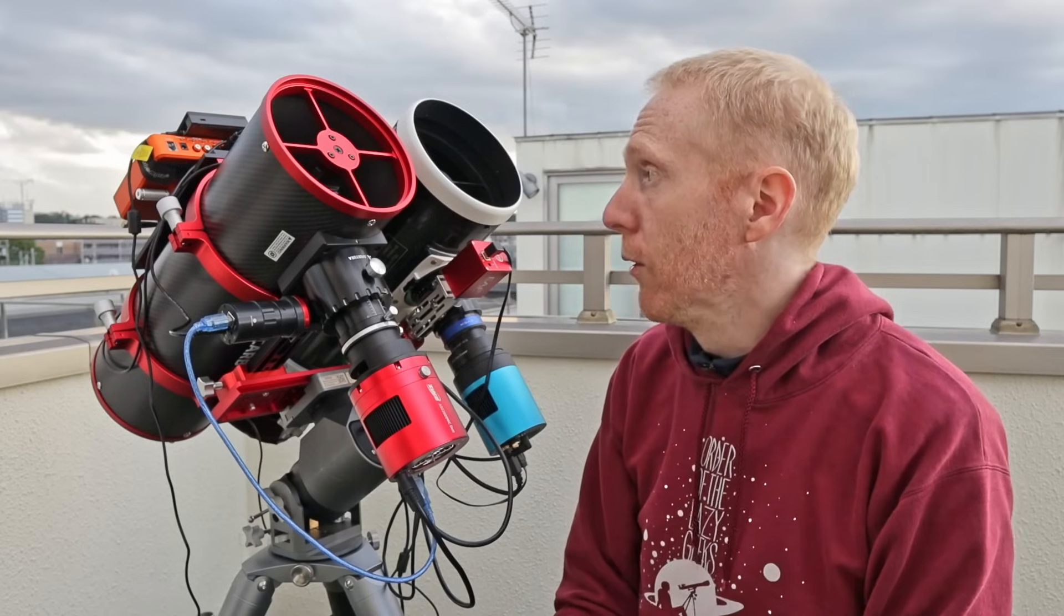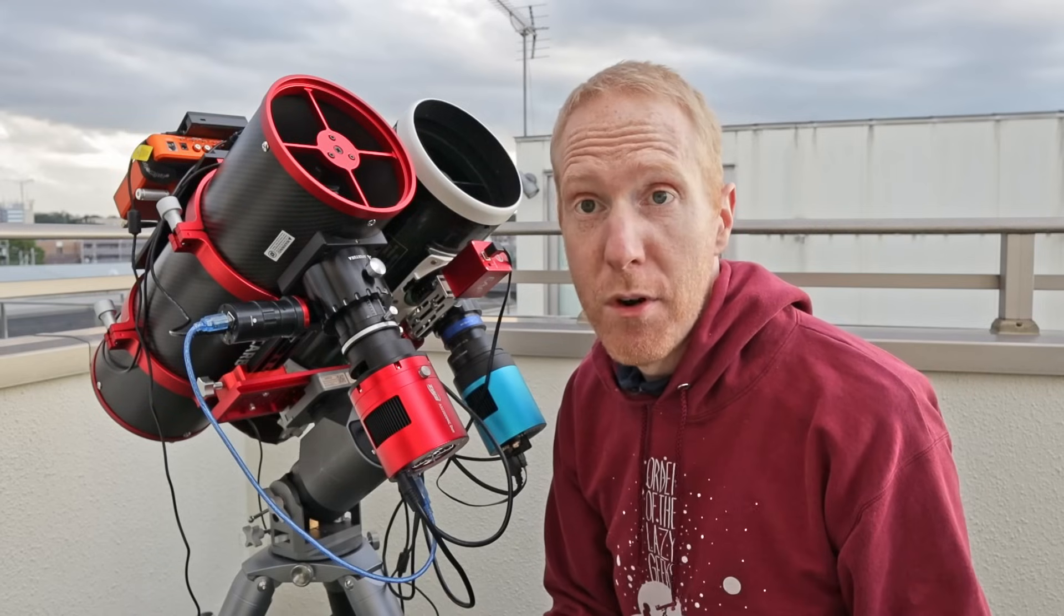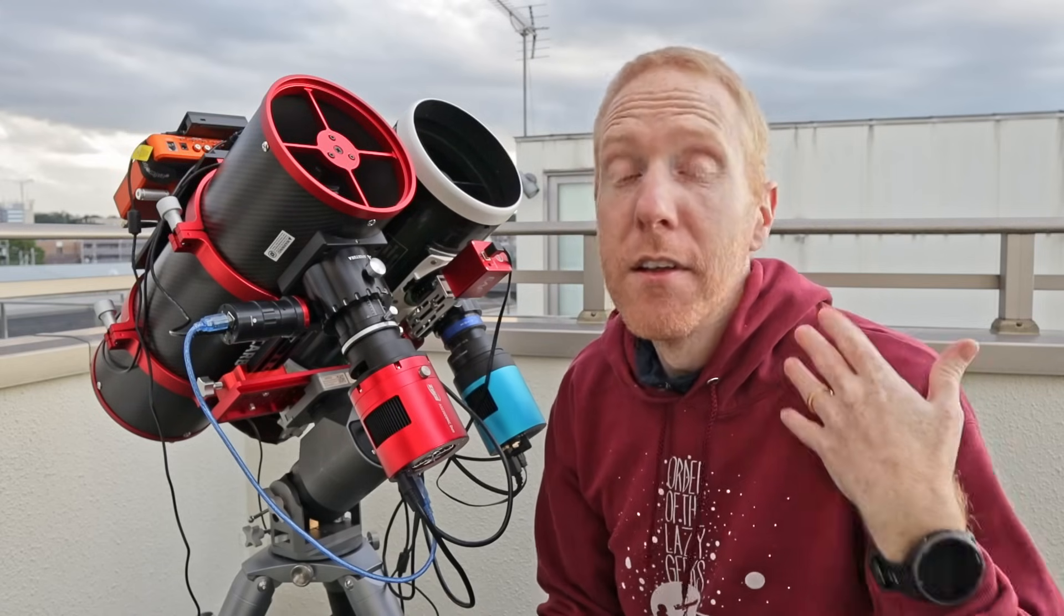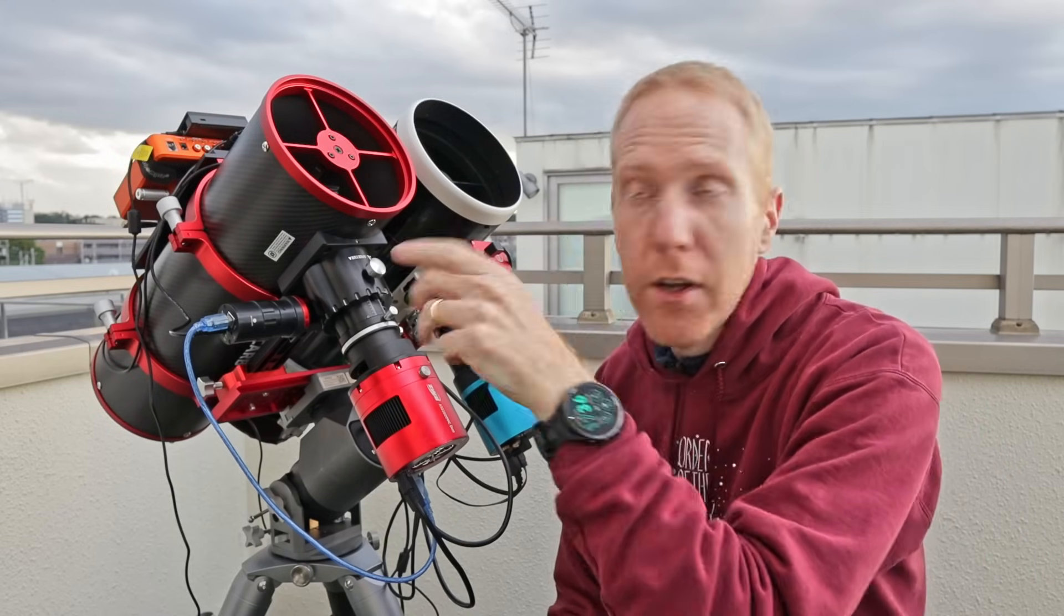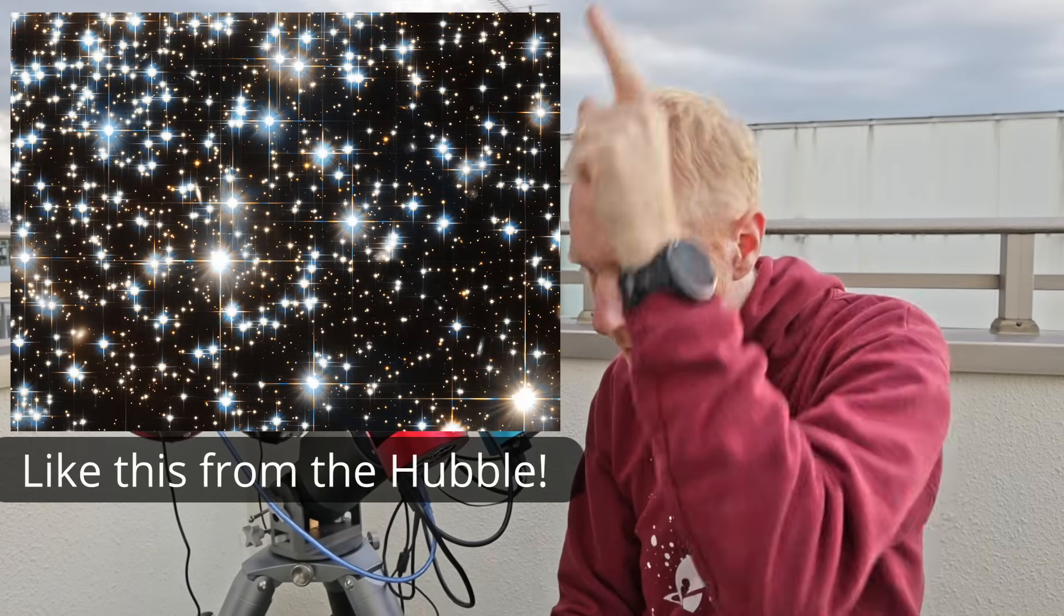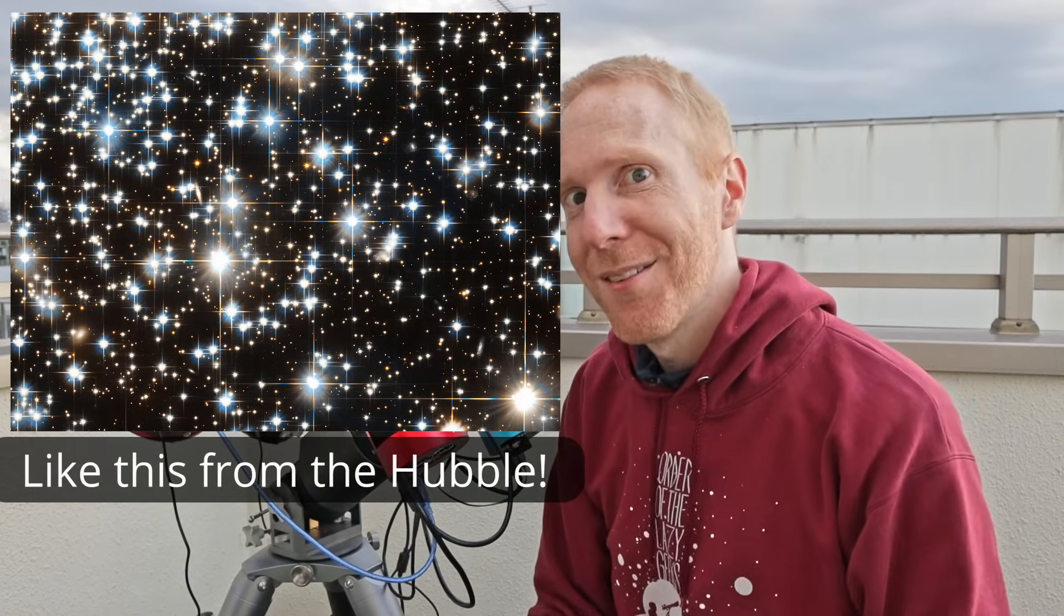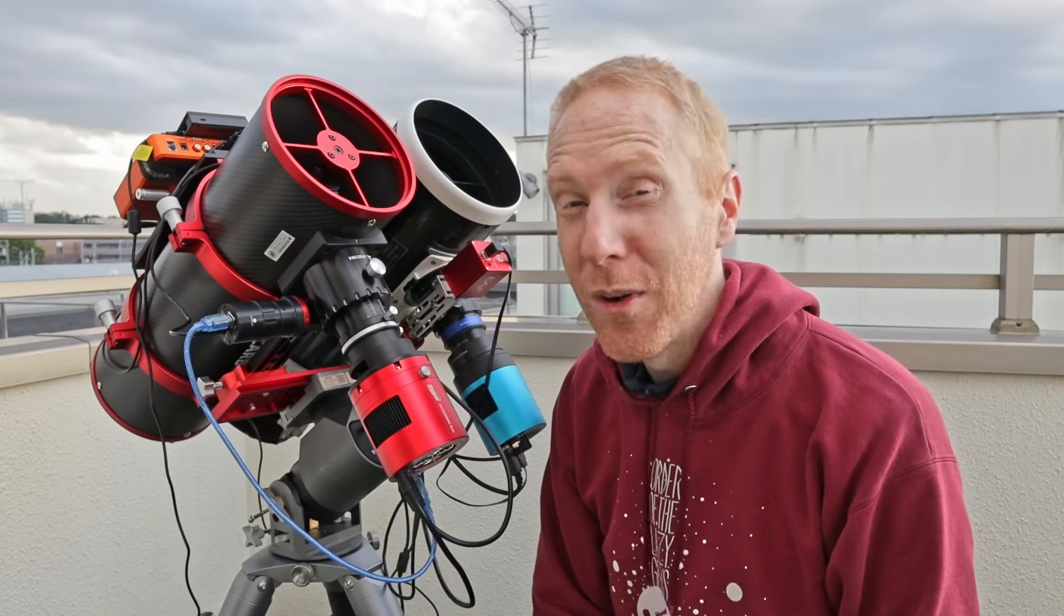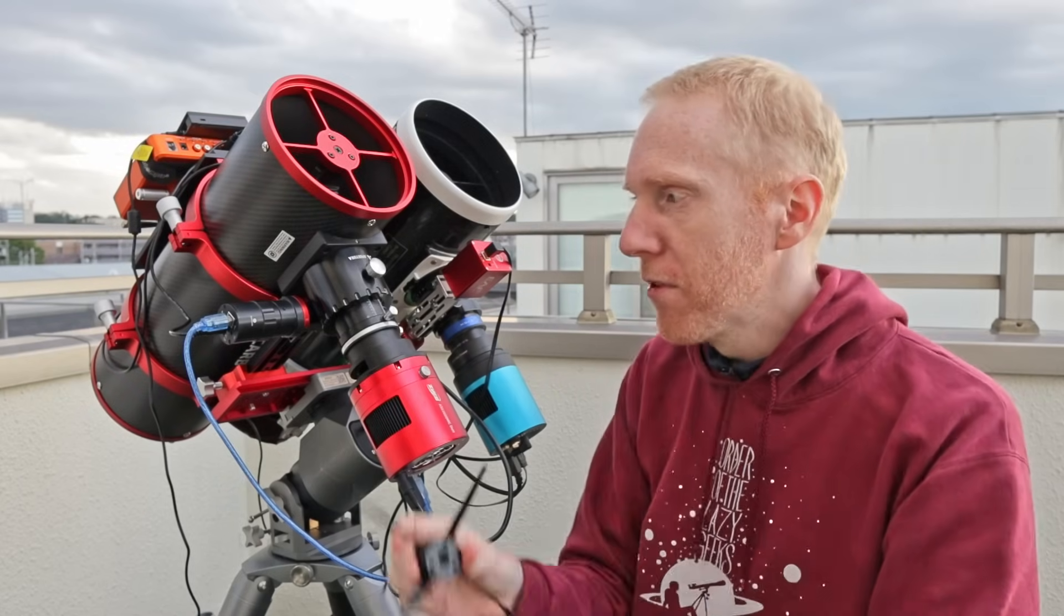So the problem with those spikes or the spider that holds the secondary mirror in place is that while light kind of has to go around them and that creates diffraction artifacts, meaning that stars, instead of being just like pure round dots, ideally, they become crosses. They have like this cross thing going on. And a lot of people love that because it reminds them of Hubble pictures or whatever and professional observatories where there's very often those diffraction spikes.